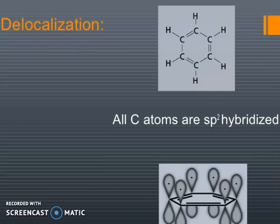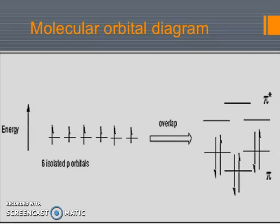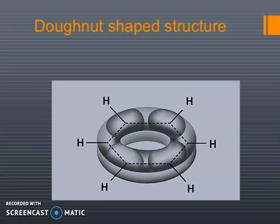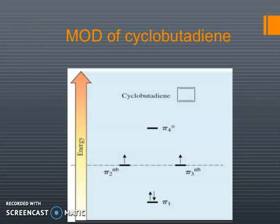Delocalization — all carbon atoms are sp2 hybridized. In the molecular orbital diagram, 6 isolated p orbitals overlap to form bonding and anti-bonding pi and pi-star orbitals. You can see over here the donut-shaped structure and the mode of cyclobutadiene.